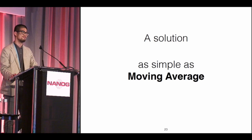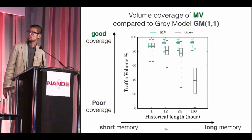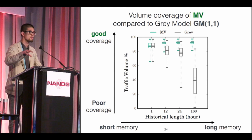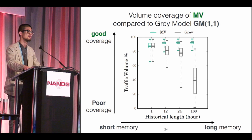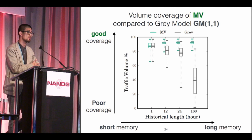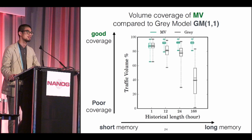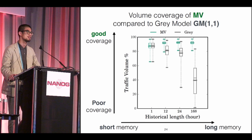Given these observations, we can opt for a very simple method to select important prefixes — as simple as moving average. This box plot shows the volume coverage of the moving average model compared to the GM(1,1) gray model previously used in forwarding table prediction, which was reported to be better than LFU and LRU. With moving average — a much simpler method — we achieve much better coverage. For this specific network, with 10% of active BGP prefixes, we are able to cover 90% of total outgoing traffic.